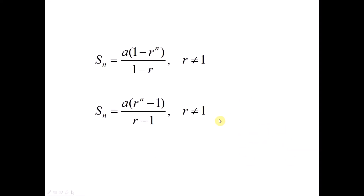When do we use each formula? Usually we use the first formula — with 1 minus r to the power of n — when the modulus of r is less than 1, for example 0.5, 1/2, or 1/3. When r is greater than 1 in modulus, whether positive or negative, we use the second formula with r to the power of n minus 1.